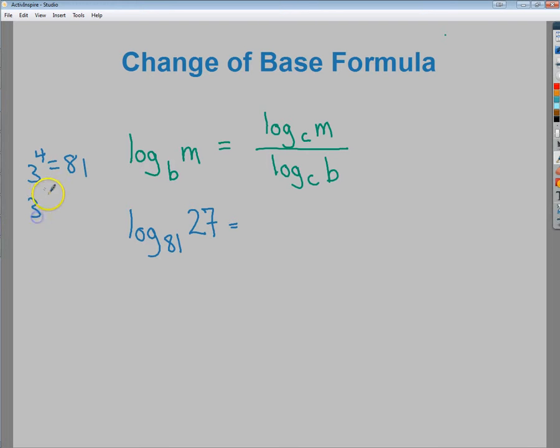So I know for a fact that 3 to the 4th power is 81. I also know that 3 to the 3rd power is 27. The convenience of the change of base formula is just I can say, okay, so log base 3 of 27 over log of base 3, 81.